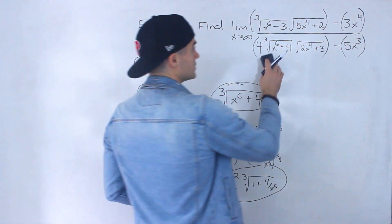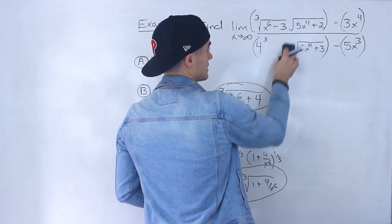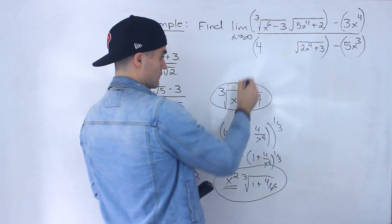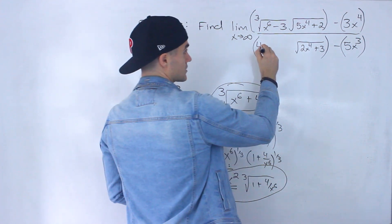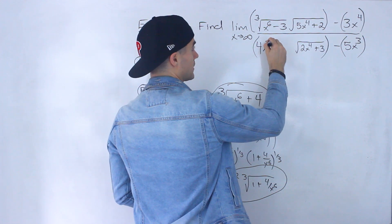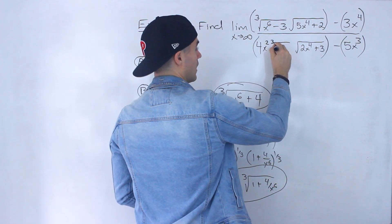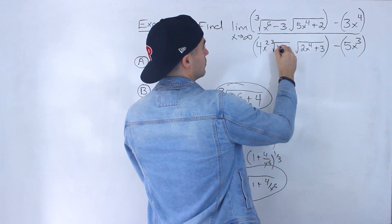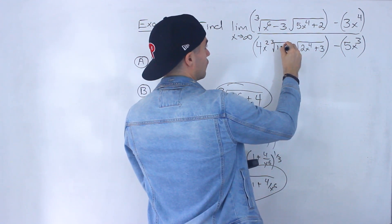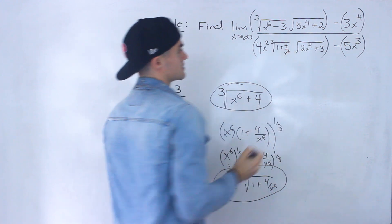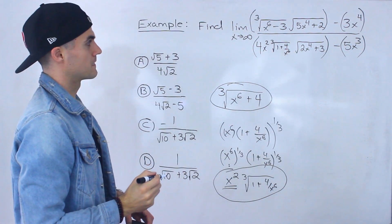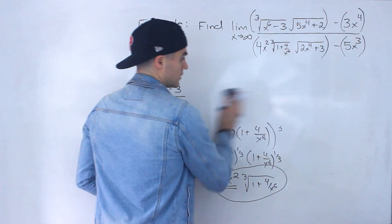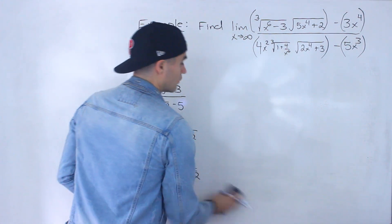All we're really concerned about is what the degree is. This expression is the exact same as this expression. What's nice now is that we know the degree of this expression is two. The third root of x to the six is basically x to the highest degree under that root. So I'm going to rewrite this as x squared times the third root of one plus four over x to the six.